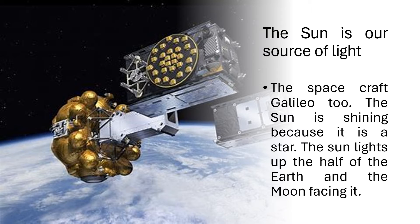The sun is our source of light. The spacecraft Galileo 2. The sun is shining because it is a star. The sun lights up half of the earth and the moon facing it.